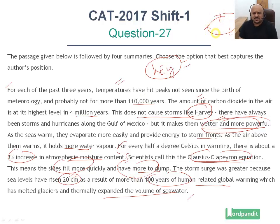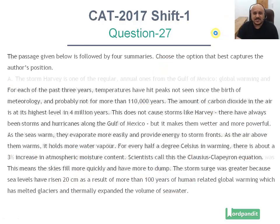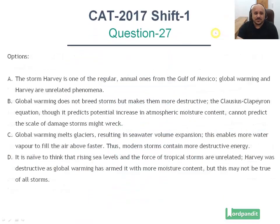So the passage is basically about global warming and how it is causing storms to be much more powerful than before. Now let us keep this in mind while analyzing the answer options.